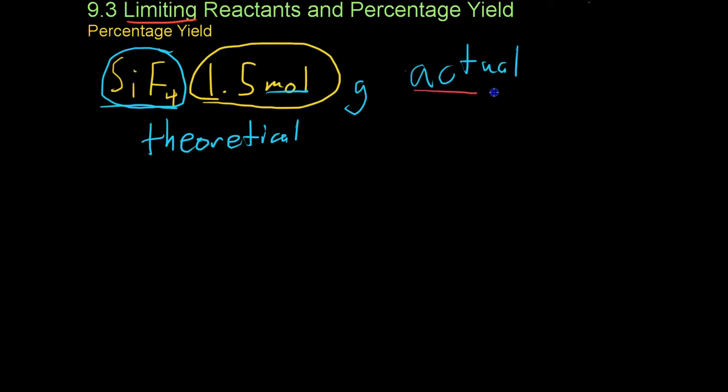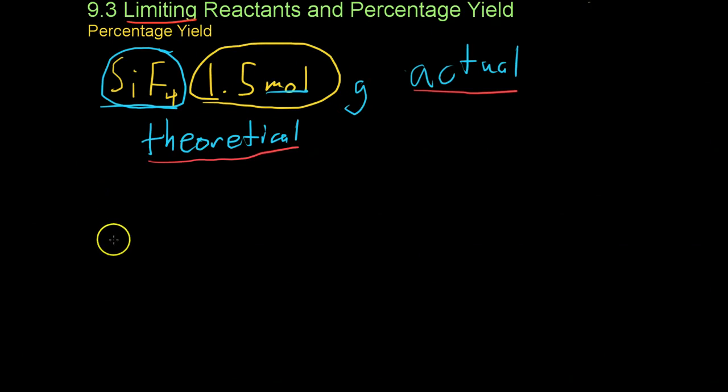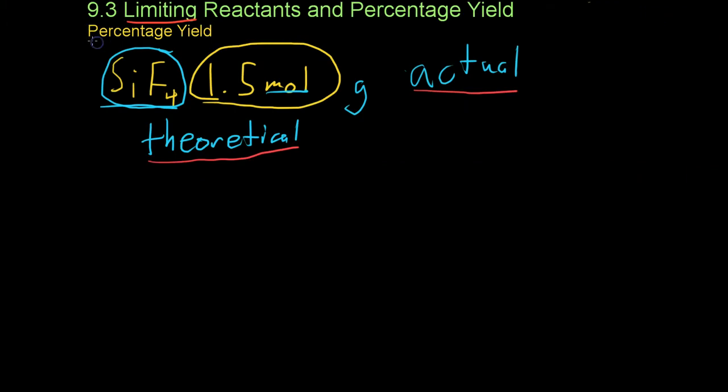The difference between the actual yield and the theoretical yield is very important for chemists in order for them to measure the efficiency of their reactions. The way chemists measure this efficiency is through a measurement called, to no surprise, percentage yield.